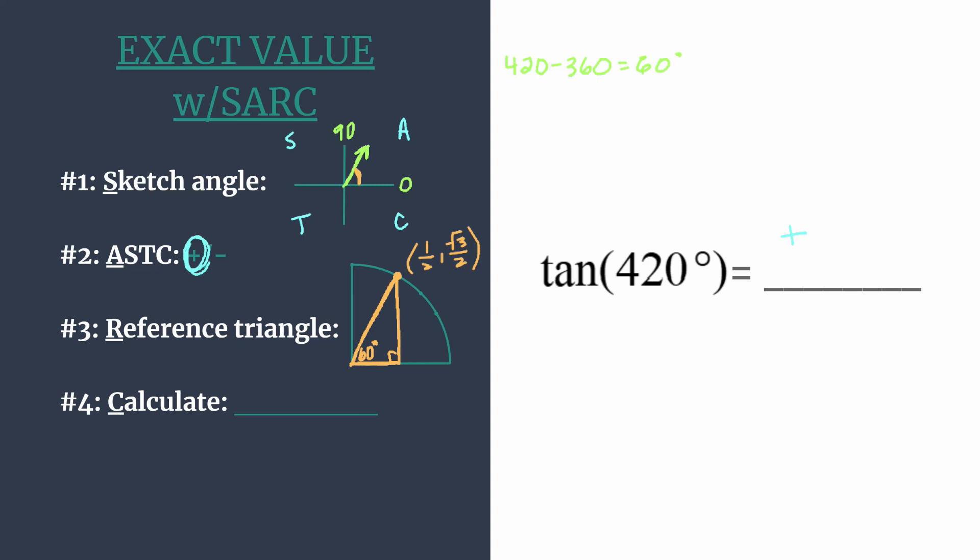And now that we know these coordinates, we can calculate. So we know that the tangent of an angle on the unit circle is just going to be y divided by x.